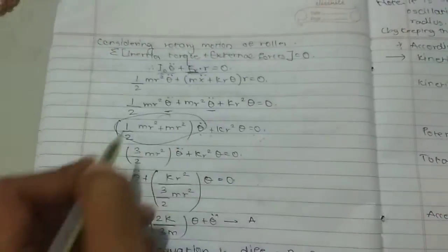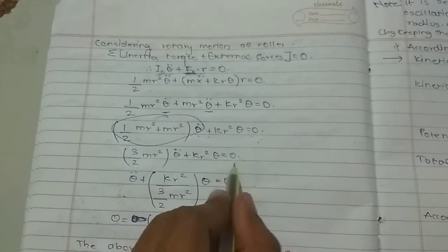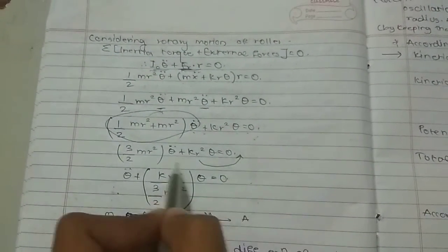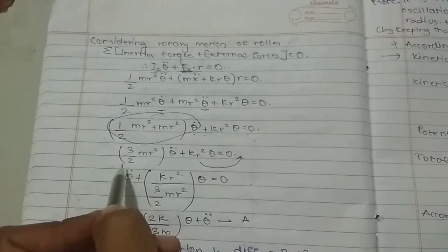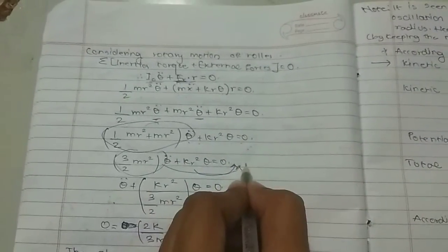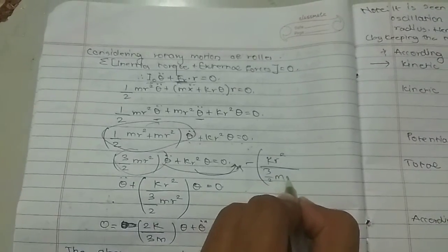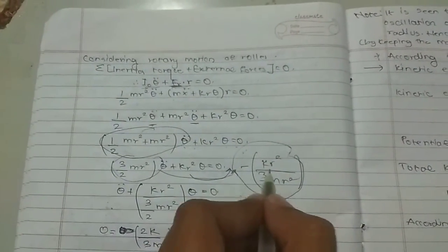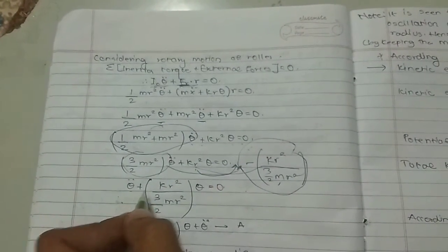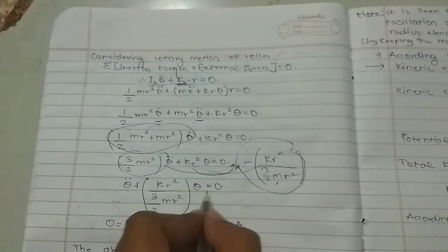After solving the bracket we get (3/2)*m*r²*theta-double-dot plus k*r²*theta equals zero. Sending k*r² to one side and (3/2)*m*r² to the other side we get minus k*r² divided by (3/2)*m*r². Rearranging, we have theta-double-dot plus [k*r² / ((3/2)*m*r²)] * theta equals zero.